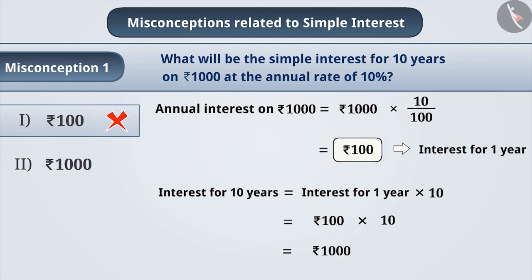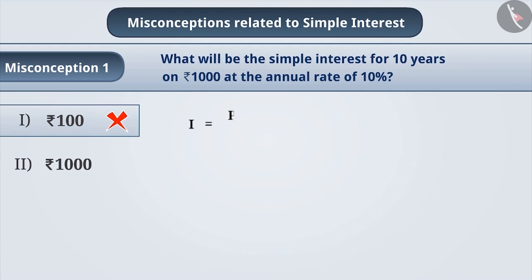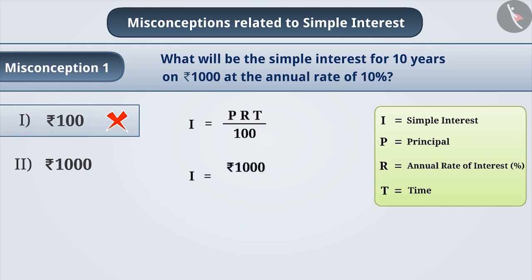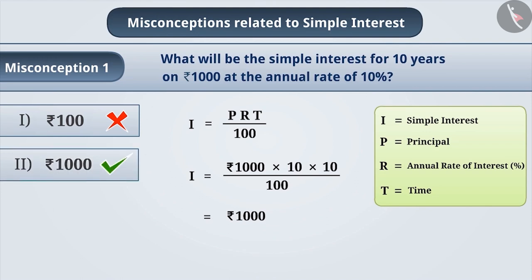If we solve this example using the formula, these mistakes can be avoided. The formula for simple interest is I = PRT / 100, where I is simple interest, P is principal, R is annual rate of interest, and T is time. Therefore, I = 1000 × 10 × 10 / 100, which is equal to Rs. 1000. Thus, option 2 is the correct answer.